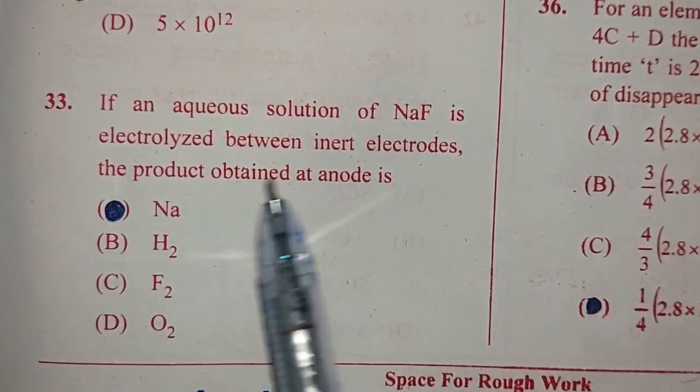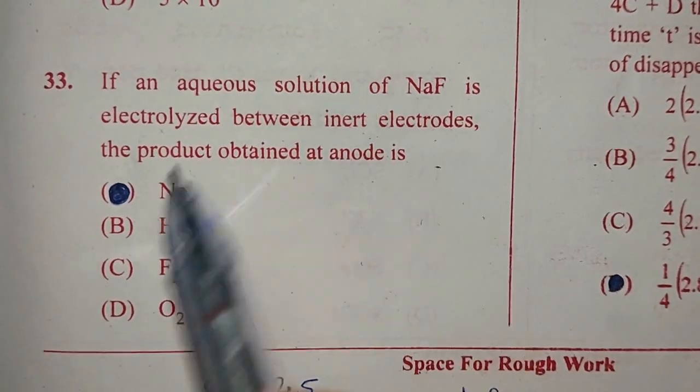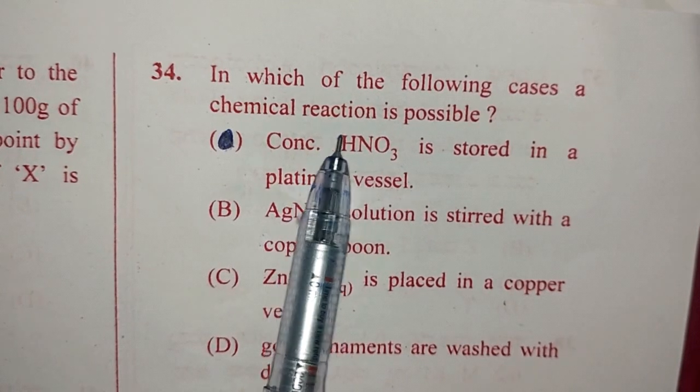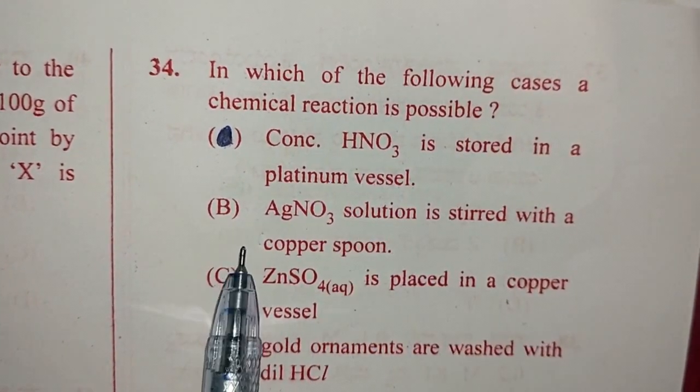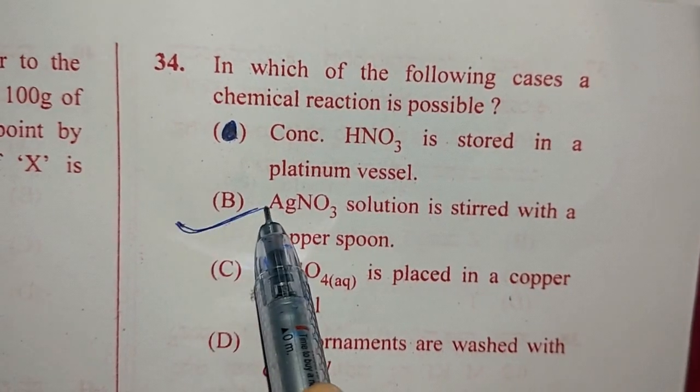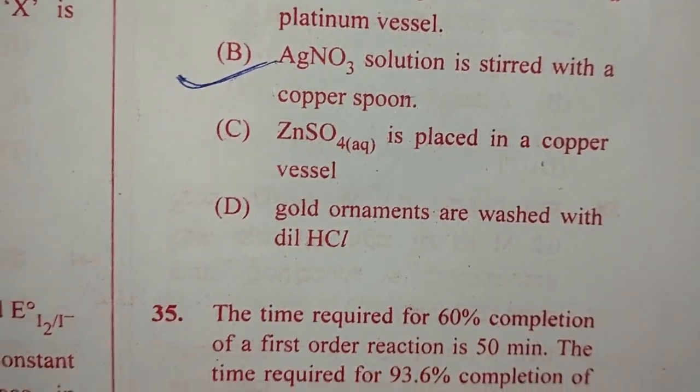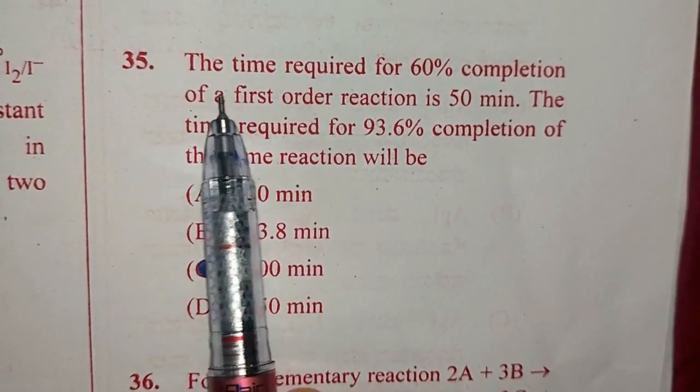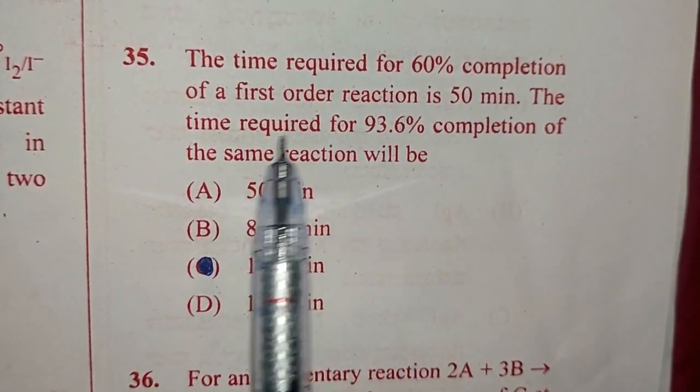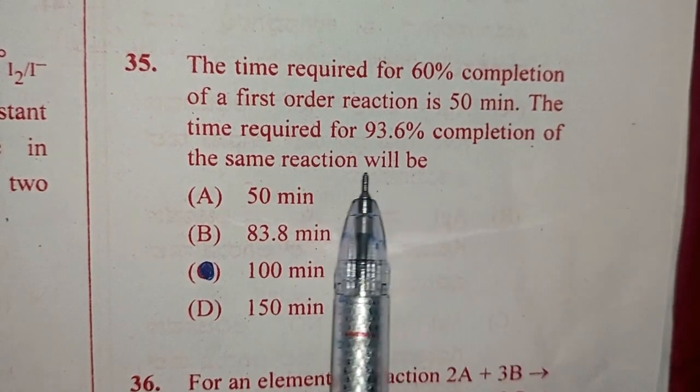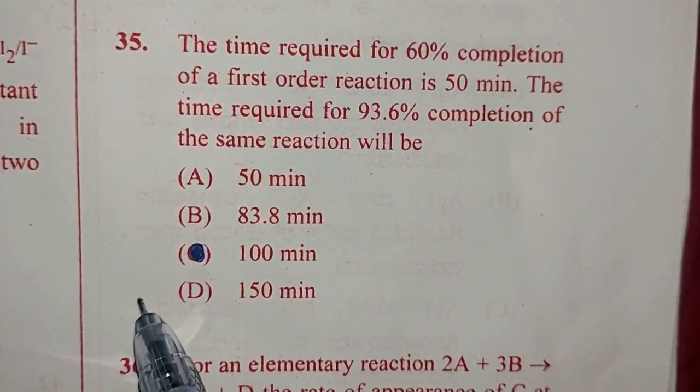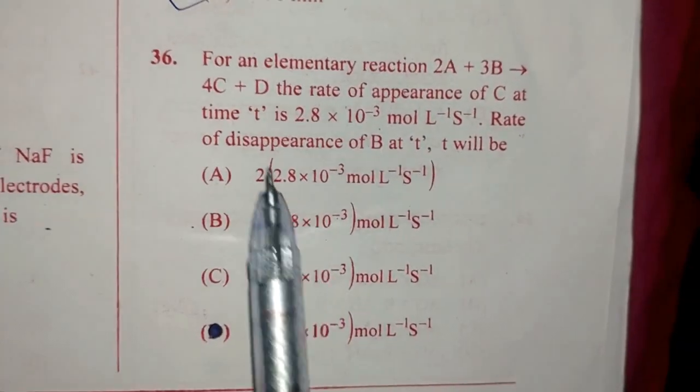Question 33. If an aqueous solution of NaF is electrolyzed between inert electrodes, the product obtained at anode, and the answer for this question is option D, oxygen. Question number 34. In which of the following cases a chemical reaction is possible? The chemical reaction is possible when AgNO3 solution is stirred with copper spoon, that is option B. Question number 35. The time required for 60% completion of a first order reaction is 50 minutes. The time required for 93.6% of completion of the same reaction will be and the answer for this question is option D, 150 minute.